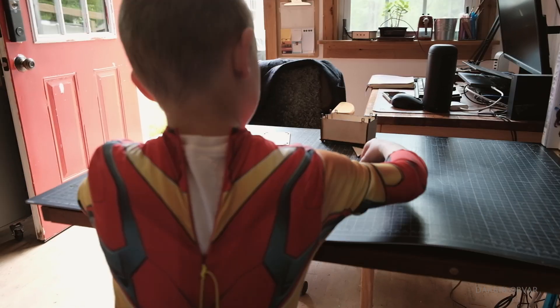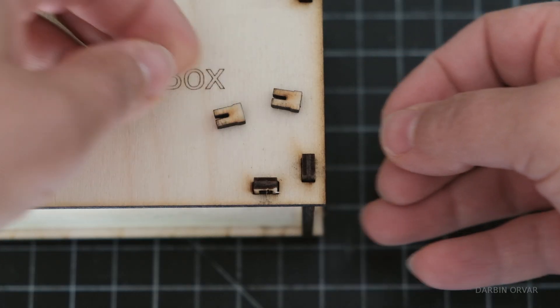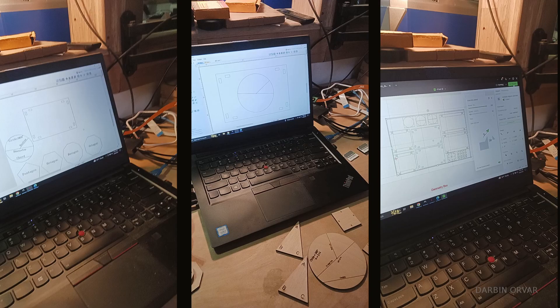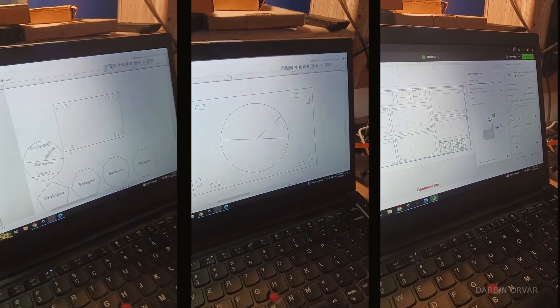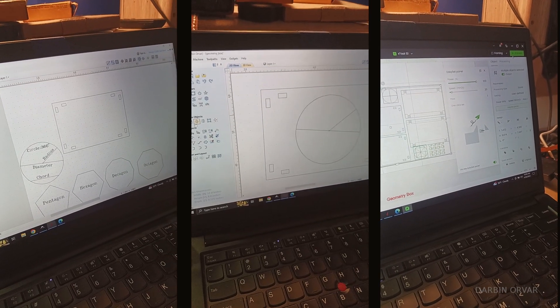It wasn't like one day we said, okay, now you're five, now we can start reading or do math or anything like that. It's just been kind of a thing all along. Since we have a shop full of tools, we often make things for him or include him in the workshop and have him be part of projects.